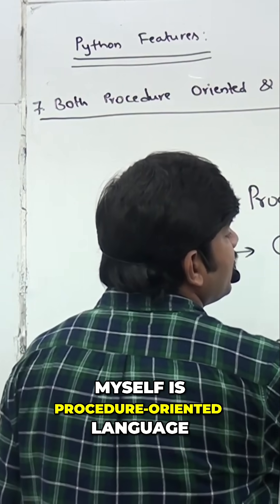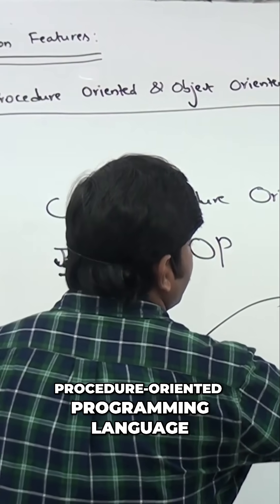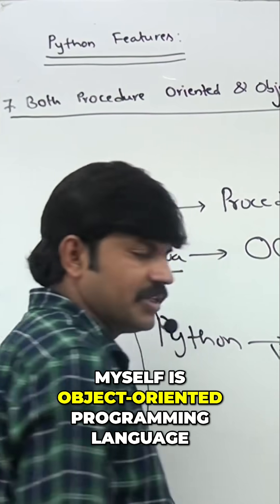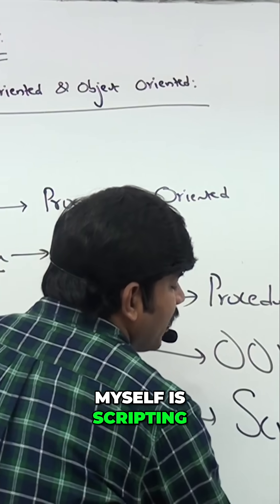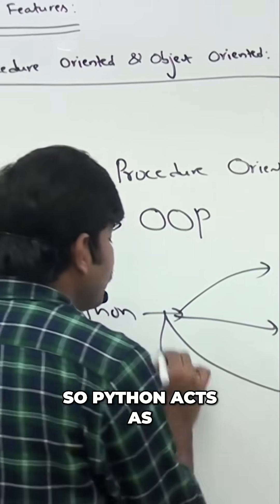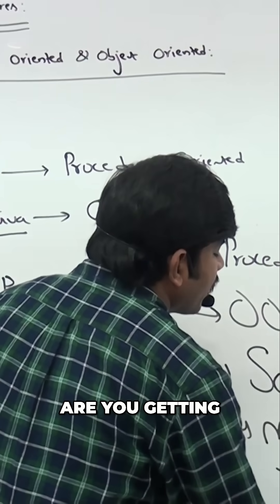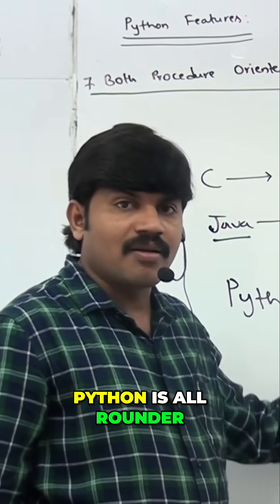Myself is procedure oriented language, procedure oriented programming language. Myself is object oriented programming language. Myself is scripting language. Are you getting? Myself here scripting, scripting language. So Python acts as modular programming language. Modular programming language. Python is all rounder.